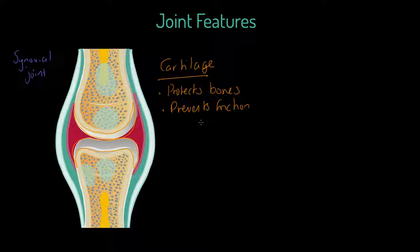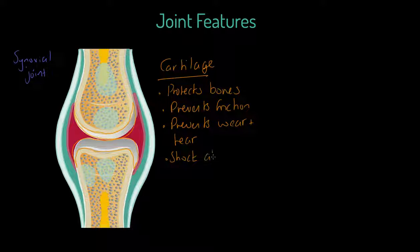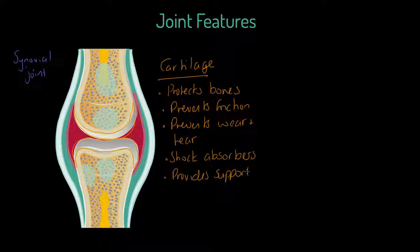The cartilage prevents friction and prevents wear and tear. That's why I mentioned arthritis type conditions, they are the wear and tear of this cartilage. They're also excellent shock absorbers, they absorb impact on any kind of collision or landing. In the lower body it could be a landing, and they provide support to the actual joint itself.